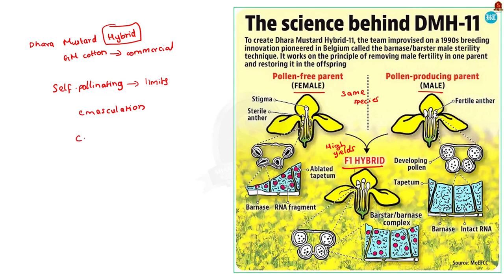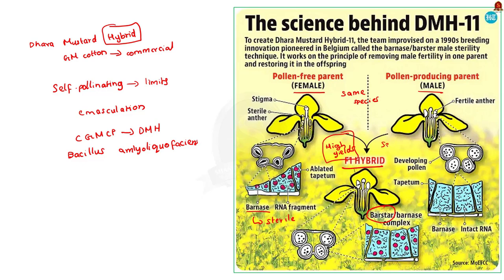Scientists at Delhi University's Centre for Genetic Manipulation of Crop Plants developed hybrid mustard DMH-11 by using two alien genes derived from a soil bacterium called Bacillus amyloliquefaciens. The first gene, barnase, encodes a protein that reduces pollen production and makes the plant male sterile, inducing temporary sterility so it cannot self-pollinate. This plant is then crossed with a fertile parental line containing the second barstar gene, which blocks the barnase gene's action. The resultant F1 progeny is both high-yielding and capable of producing seeds. Varuna variety with barnase gene is crossed with East European early Hira-2 mutant with barstar gene.